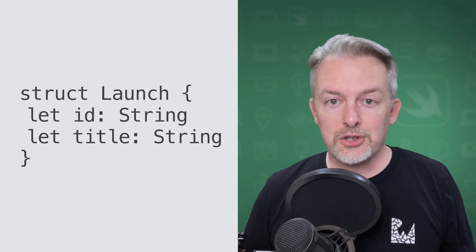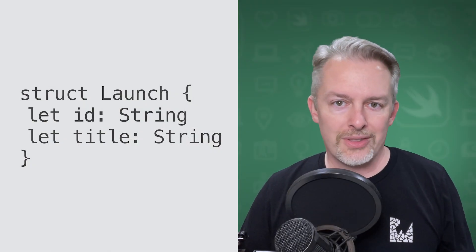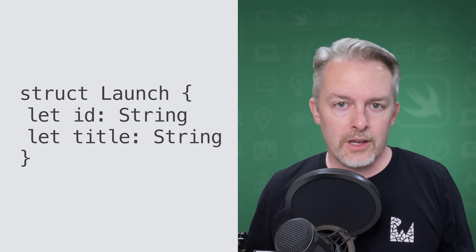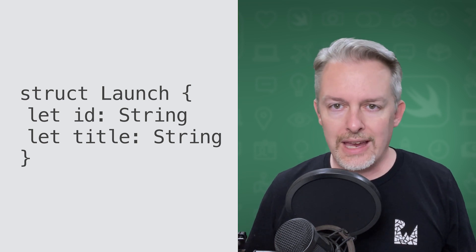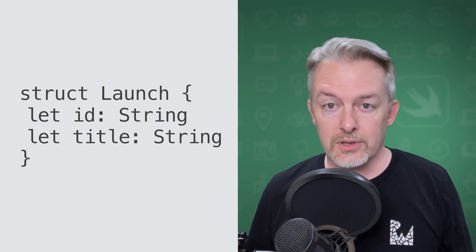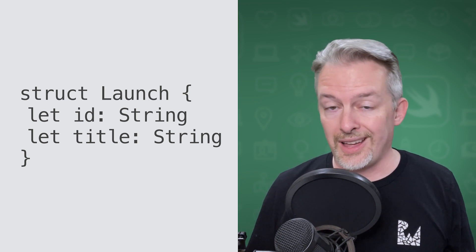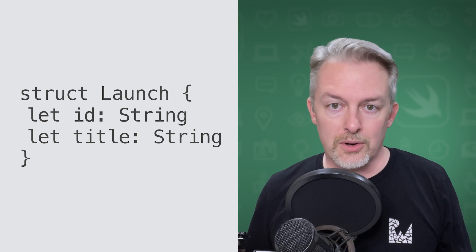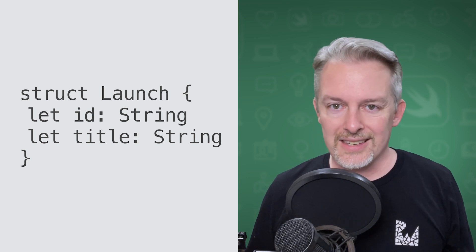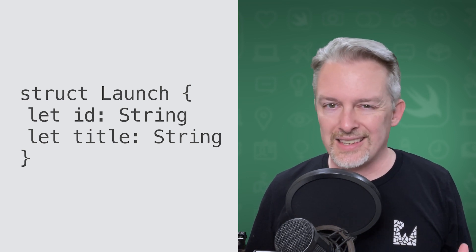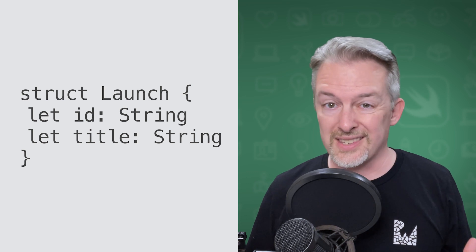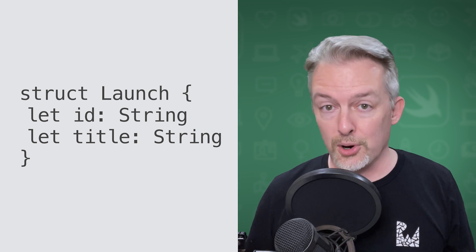When you use the Rocket Launches app, you need a way to model the concept of a launch. You could create a Swift type using a struct or class. This is how you would normally do it, but creating instances of this class isn't sufficient to store or persist the data permanently.